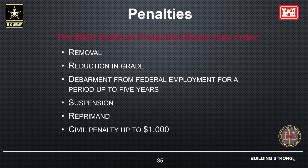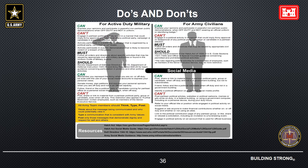The penalties for violating the Hatch Act are serious. The Merit Systems Protection Board may order removal, reduction in grade, debarment from federal employment for a period up to five years, suspension, reprimand, or a civil penalty up to $1,000. Here's a summary of do's and don'ts — remember to think before you post.